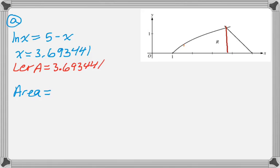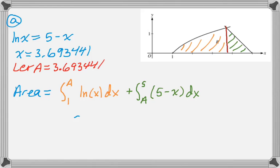And the area will be first this region, which is the integral from 1 to A of the natural log of x dx. And then I'm going to add to it this region, which is the integral from A to 5 of 5 minus x dx. And then you punch that into your calculator. You get this to three decimal places, you write it down, and you're done.